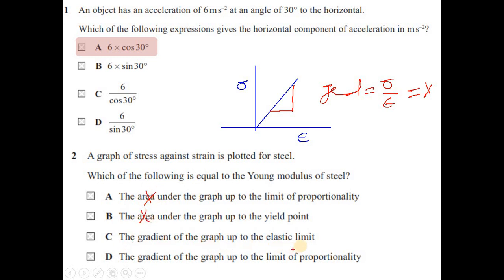We need the gradient up to the limit of proportionality, not the area. Because we need the gradient of a straight line, and for a straight line we have data up to the limit of proportionality, the answer is option D.